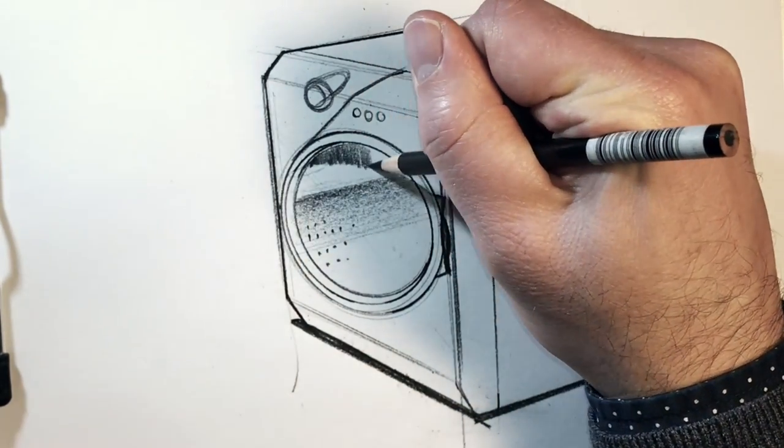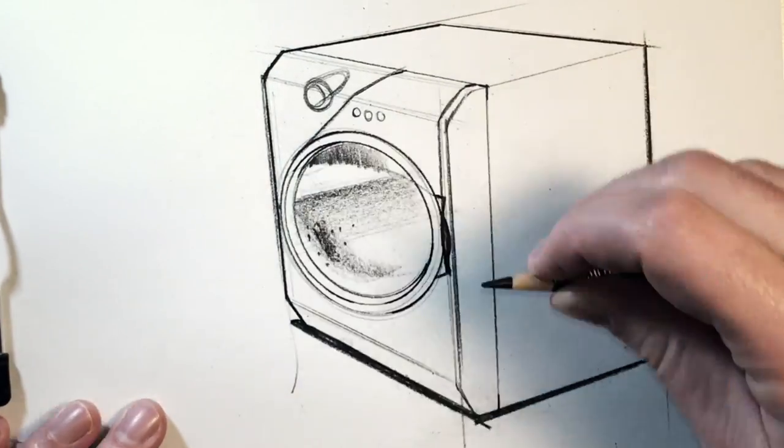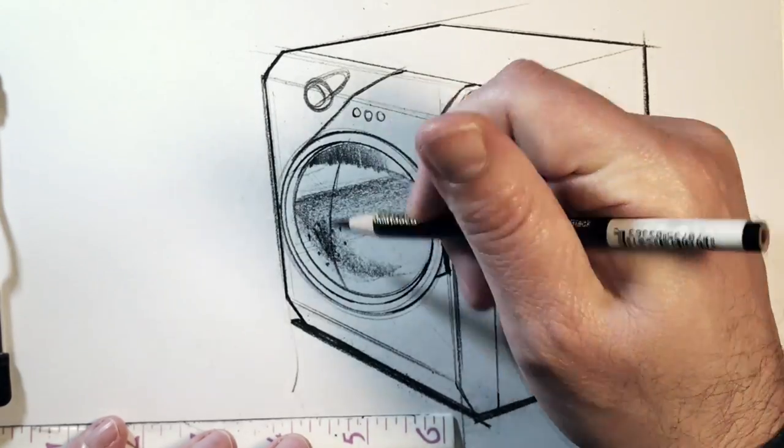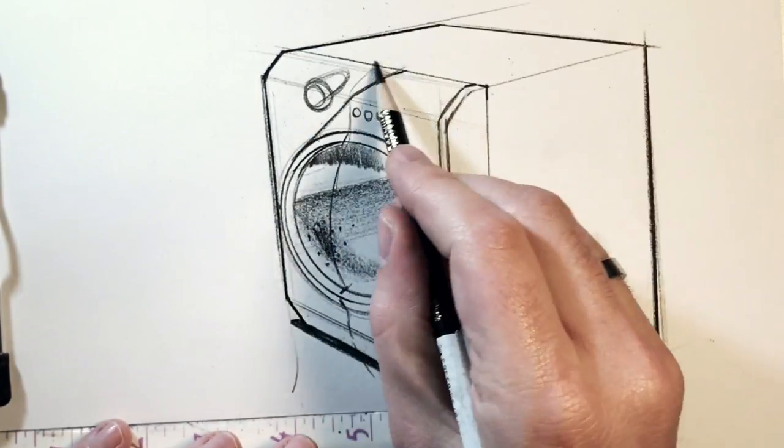We get a little cast shadow on the inside, and then maybe that glass has a little bow to it, so we get a little shading, get a center line on there as well.